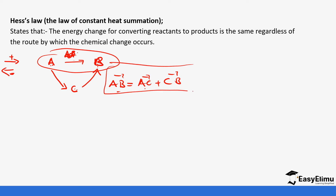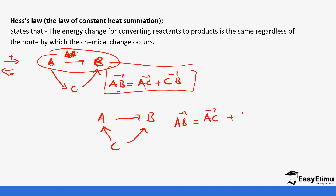This helps us get the specific formula used in Hess law. Depending on how the arrows are arranged, if a vector is going in the opposite direction, it becomes negative. So vector AB in the opposite direction equals negative AC plus CB. We take note of these directional changes especially during calculation. This formula also applies when we come to heat of solution, lattice energy, and hydration energies.